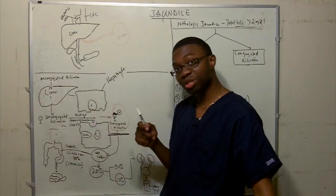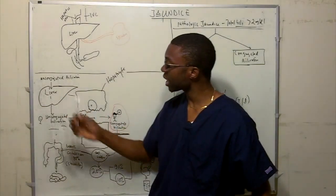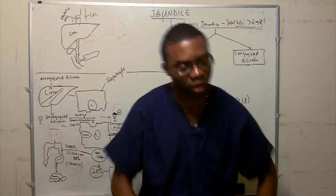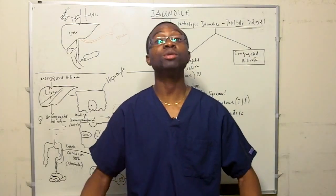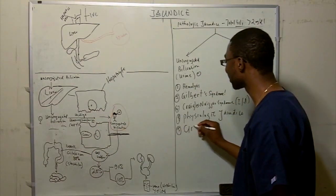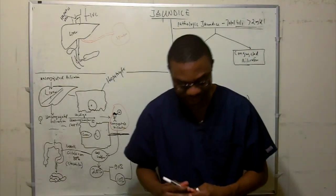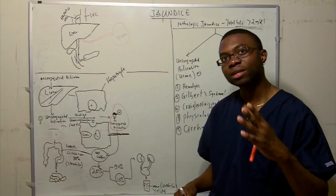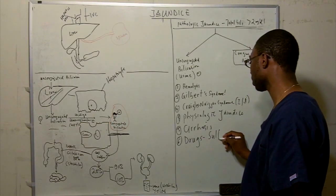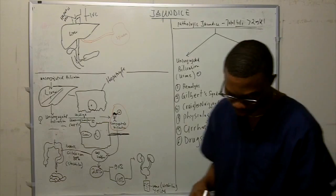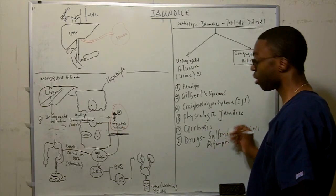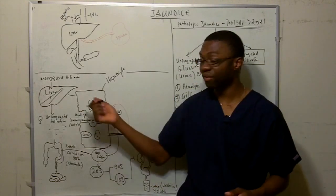Liver cirrhosis also causes unconjugated hyperbilirubinemia — when the liver is completely knocked out by cirrhosis, unconjugated bilirubin has nowhere to go. Diffuse liver damage prevents conjugation. Additionally, hepatotoxic drugs — notorious sulfonamides, penicillin, rifampin — and radio contrast agents can also cause elevated bilirubin.